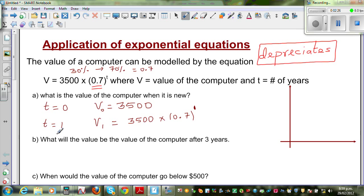So, when t is equal to 2, what would you do? Let me write this here. So, when t is equal to 2, v2 will be 3500, times this 0.7 after 1 year. Let's understand this in a different way.